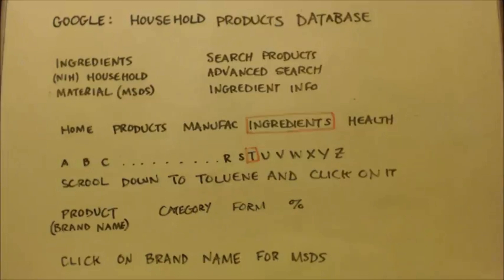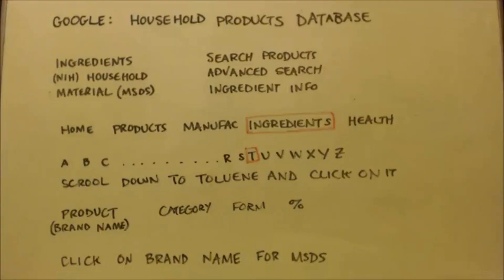It'll say: ingredients, NIH household material, safety data sheet, search products, advanced search, ingredients info. The one that has that on it — that's where you want to go. That's what you want to click on — the option that has those six things below it.